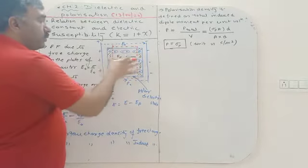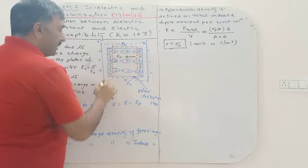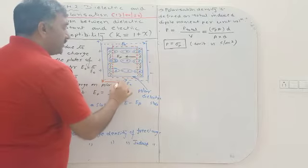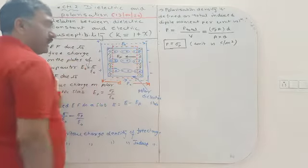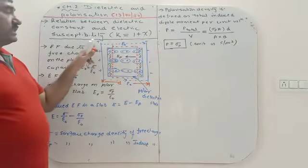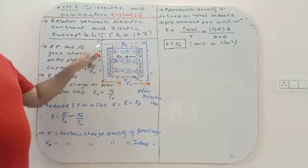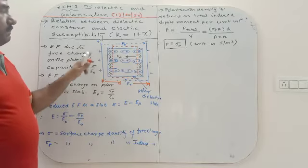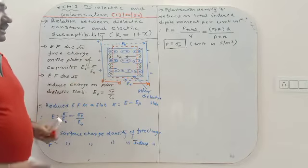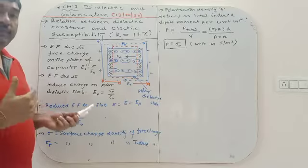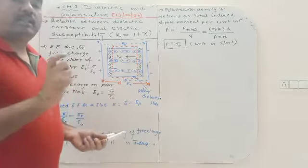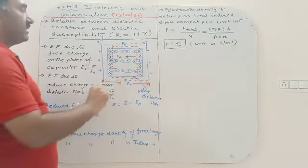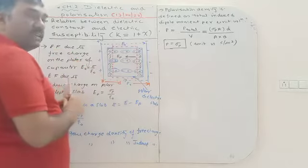The charges on the plates of the capacitor are known as free charges. When the dielectric slab is placed between the plates, the electric field due to the free charges causes all the dipoles in the slab to align in the direction of the electric field.